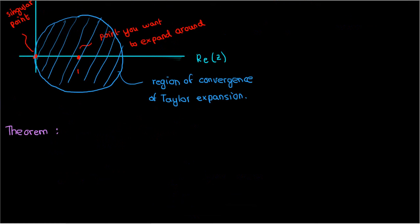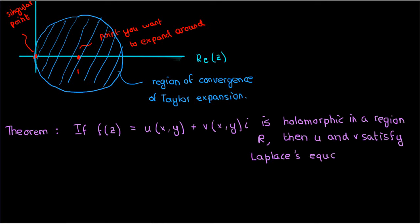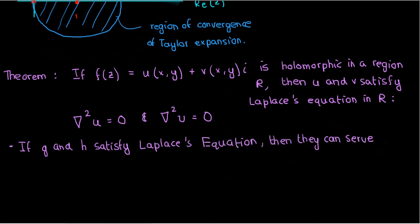One last theorem: if I have a holomorphic function f, then its real and imaginary parts both satisfy Laplace's equation in the region where f is holomorphic. This is straightforward to prove by differentiating the Cauchy-Riemann relations and doing a little algebra. Because they satisfy Laplace's equation, the real and imaginary parts u and v of a complex function are considered harmonic functions. In fact, any function satisfying Laplace's equation in a nice enough region can possibly be the real or imaginary part of a holomorphic complex function.